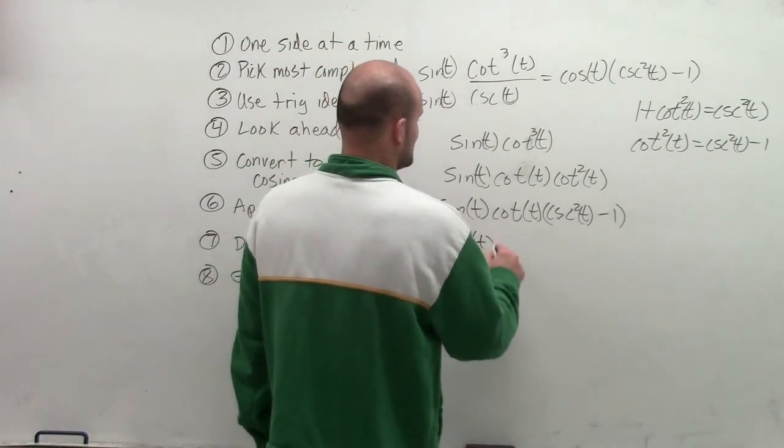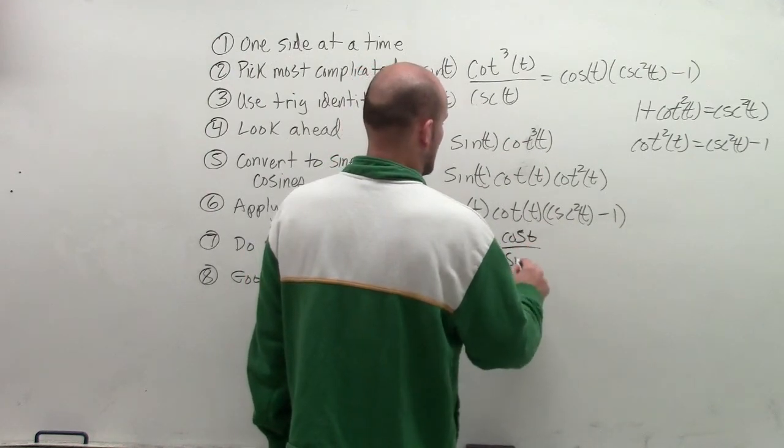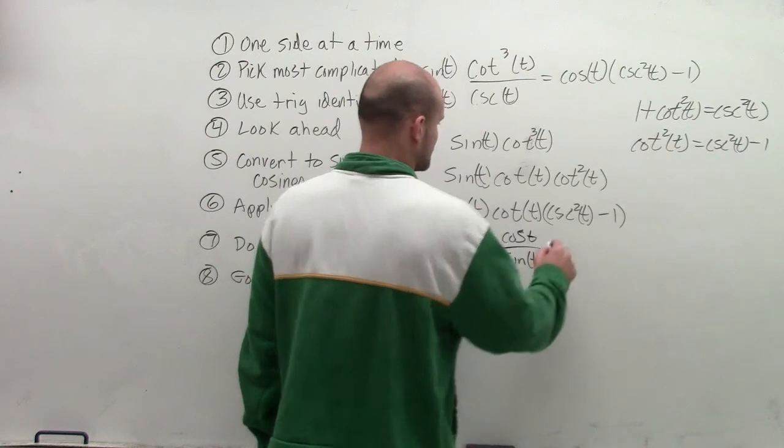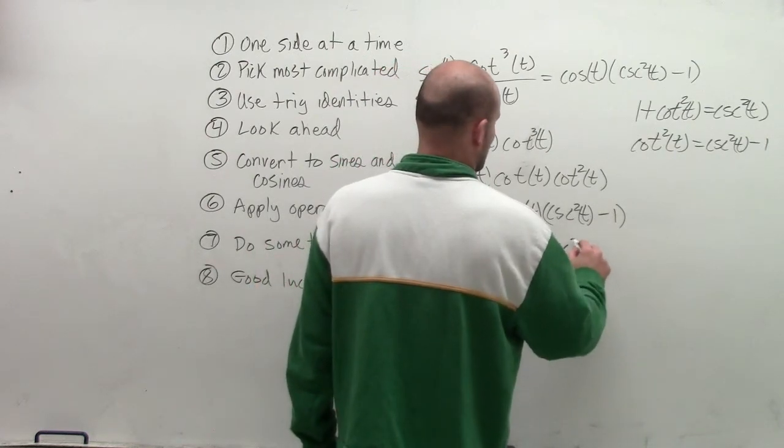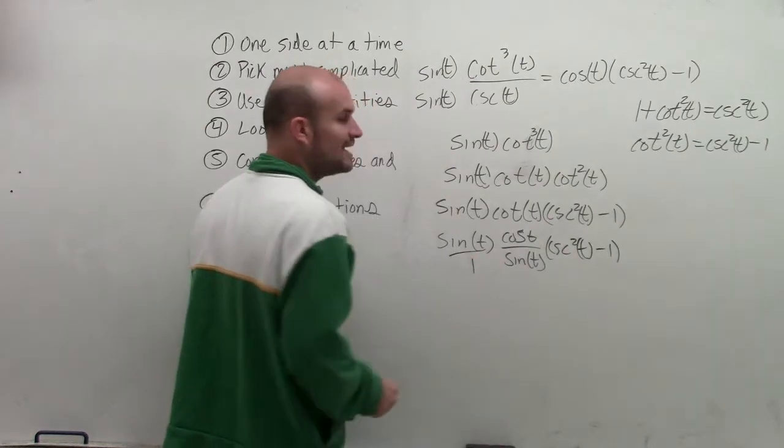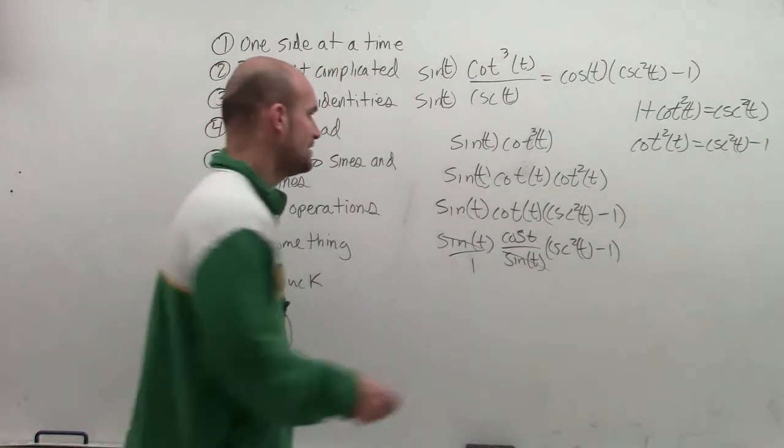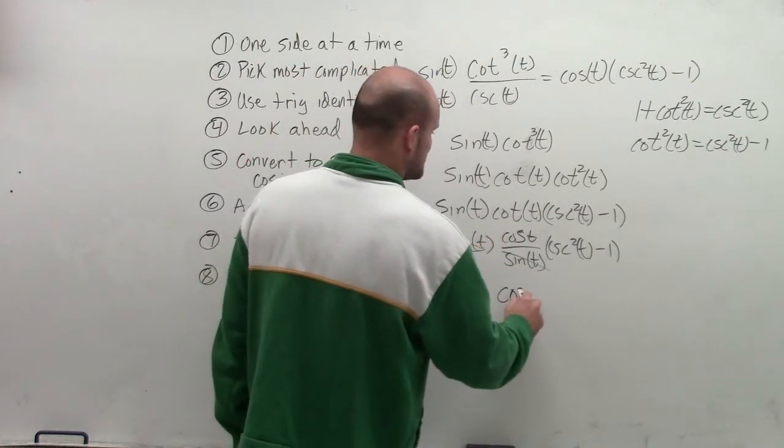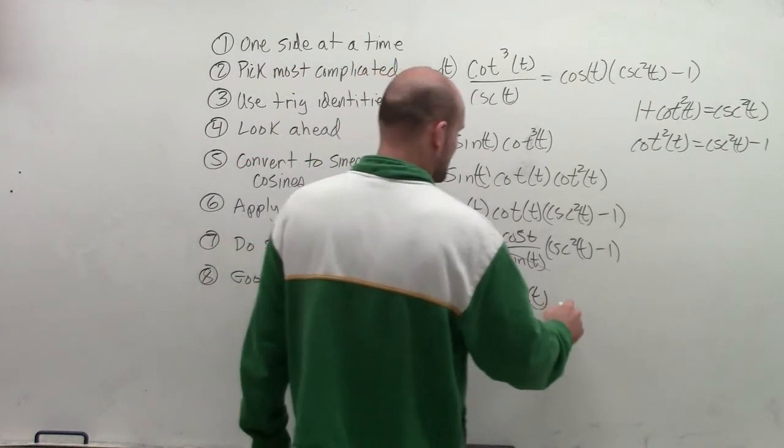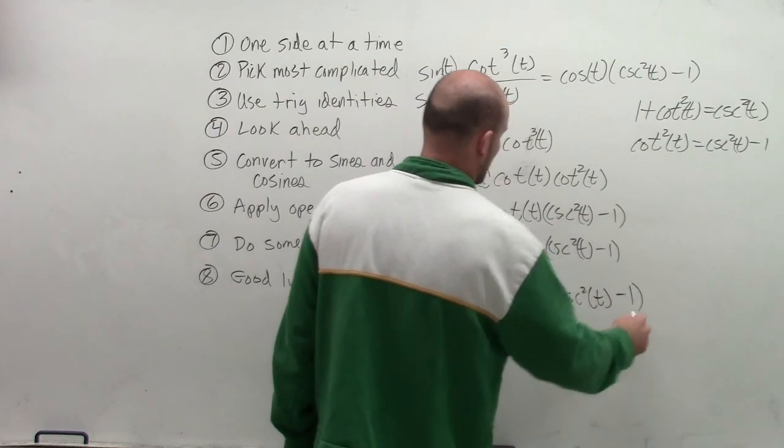I get sine of t times cosine of t divided by sine of t times cosecant squared of t minus 1. Well, what you notice is my sine is in the numerator. So therefore, I divide those out to equal 1, which is just going to leave me with cosine of t times cosecant squared of t minus 1.